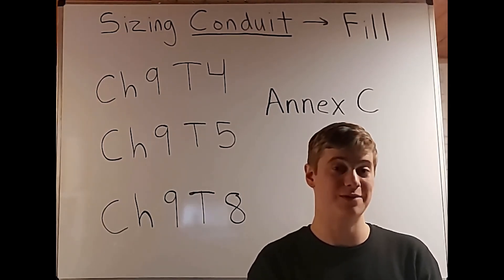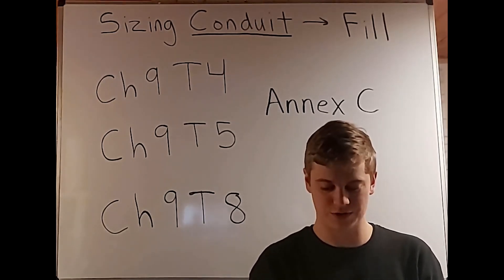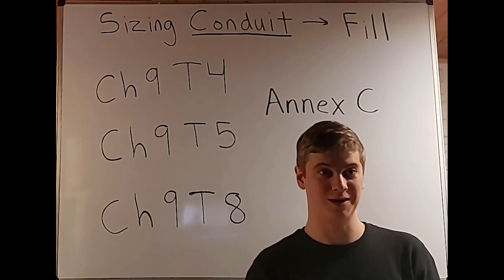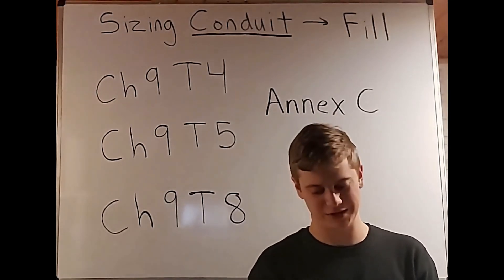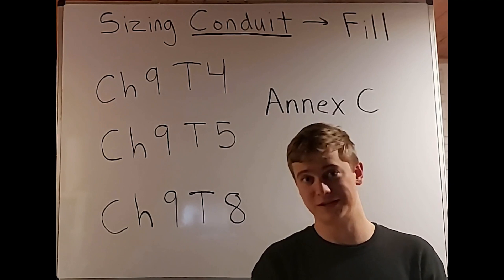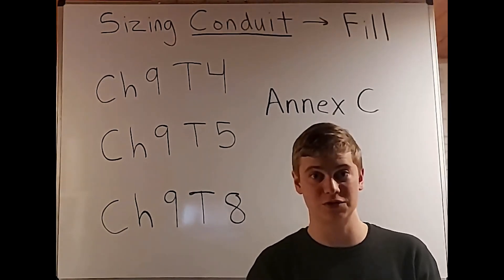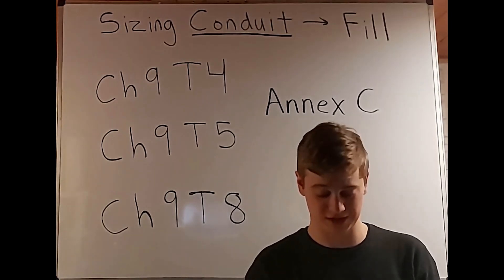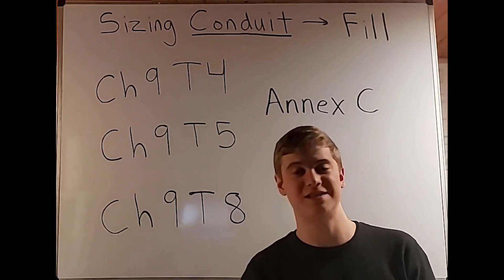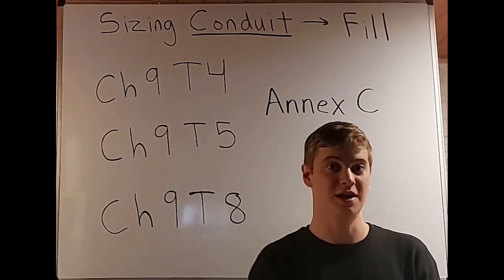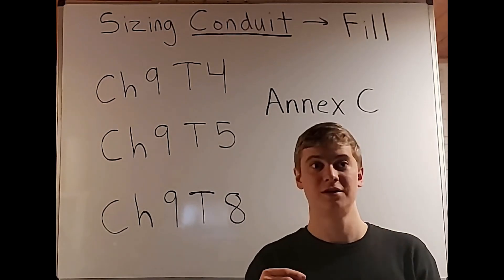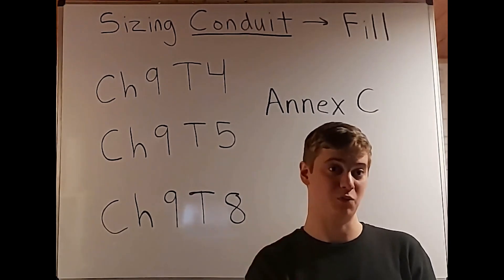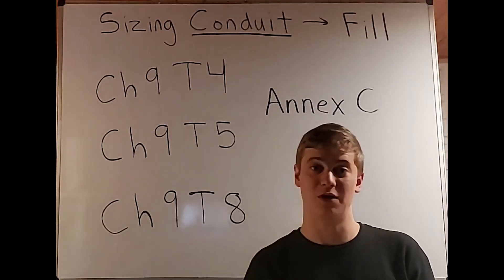Here's where things get a little interesting. If we have two cables, we're at 31%. But then if we have over two — meaning three or more — you're going to have the demand factor of 40%. Luckily, this is most of the time already in the tables we're going to be using. All you have to do is look at the 40% column if you have over two wires, or the other two columns that fit what you're working with.